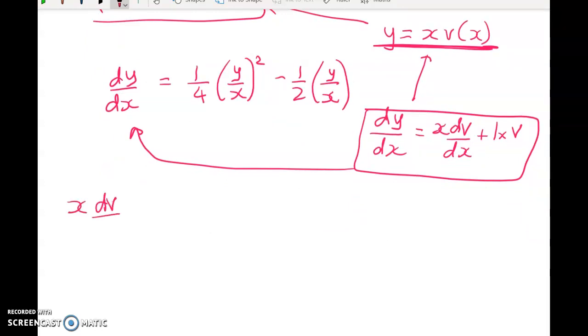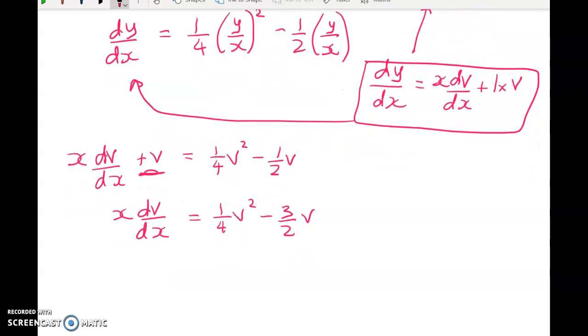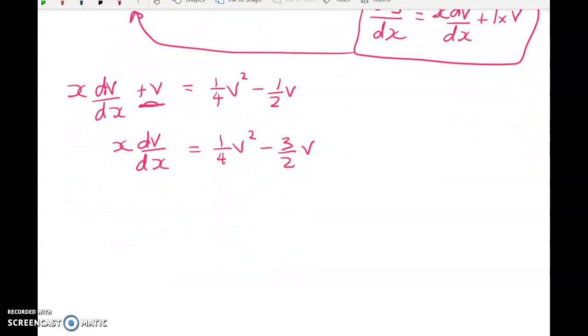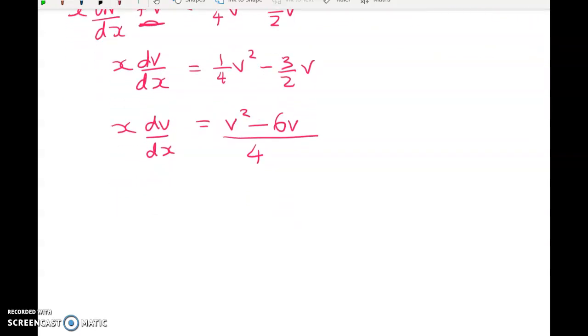So here we have X times DV by DX plus V is equal to a quarter of V squared minus a half V. X times DV by DX is equal to a quarter V squared minus 3 over 2V. Just cleaning up this. And now we've got something that looks separable. So I'll rewrite this side here as V squared minus 6V on 4. And here we've still got X times DV by DX. But we're back to something that looks utterly familiar. So you should be feeling pretty happy at this point because we're going to be able to solve this problem now.